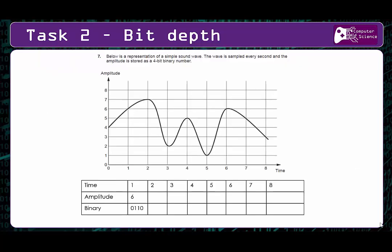Apart from giving a definition of bit depth, you might also be asked to apply it to a scenario. Here's an exam question: below is a representation of a simple sound wave; the wave is sampled every second and the amplitude is stored as a four-bit binary number. Looking at the graph, at one second the amplitude is six, so we convert six to binary - we need a two and a four but not a one or an eight. On your OneNote, find task two and fill out the rest of the table. Pause the video before I put the answers up - there's no point in cheating, you're only cheating yourselves.